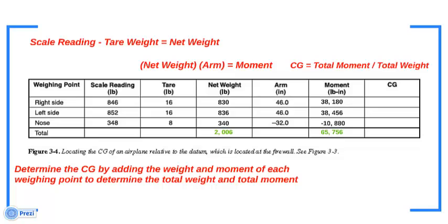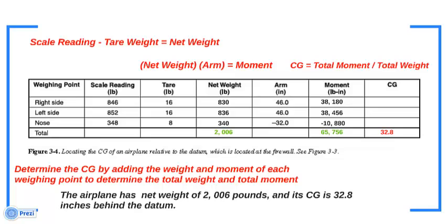If we substitute the values, it will be 65,756 divided by 2,006. The answer will be 32.8 inches behind the datum. The airplane has a net weight of 2,006 pounds, and its CG is 32.8 inches behind the datum.